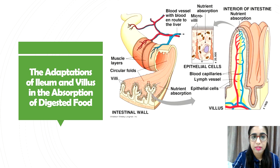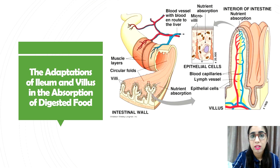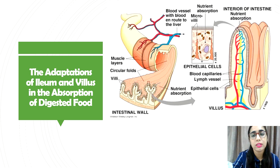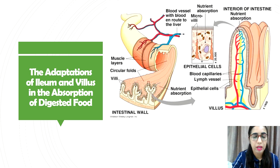Now let's look at the adaptations of the ileum and villi in the absorption of digested food. The rate of absorption of nutrients depends on: number one, the total surface area of the small intestine; number two, the thickness of the membrane between the nutrient and the blood capillary; and number three, the concentration gradient of nutrients moving across the wall of the small intestine.